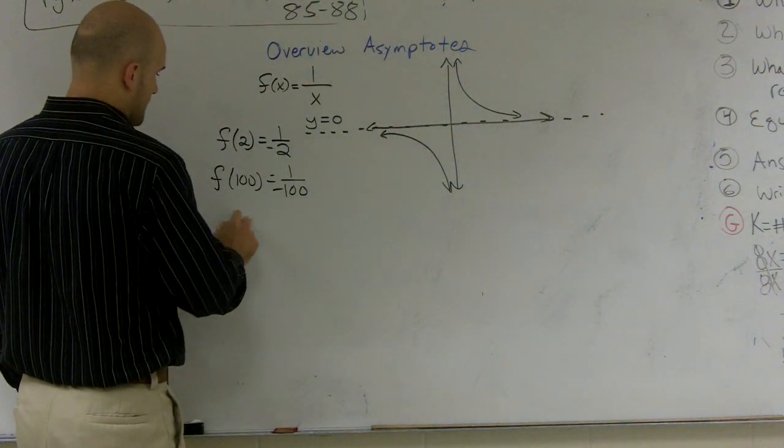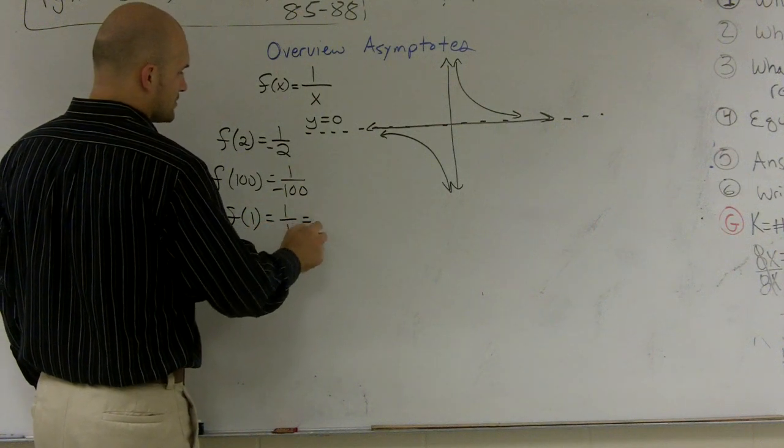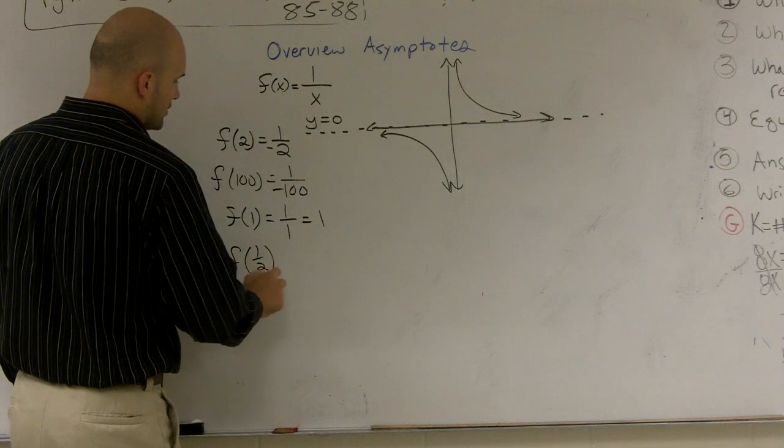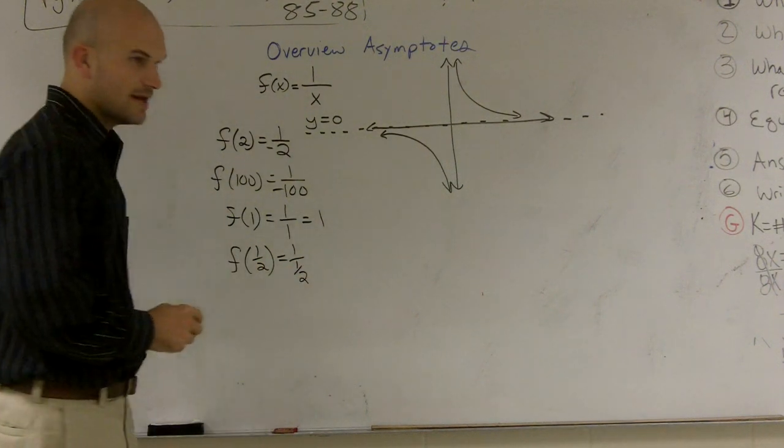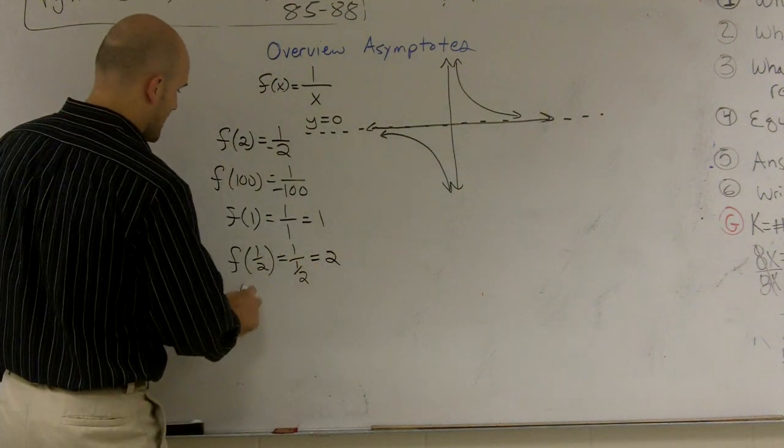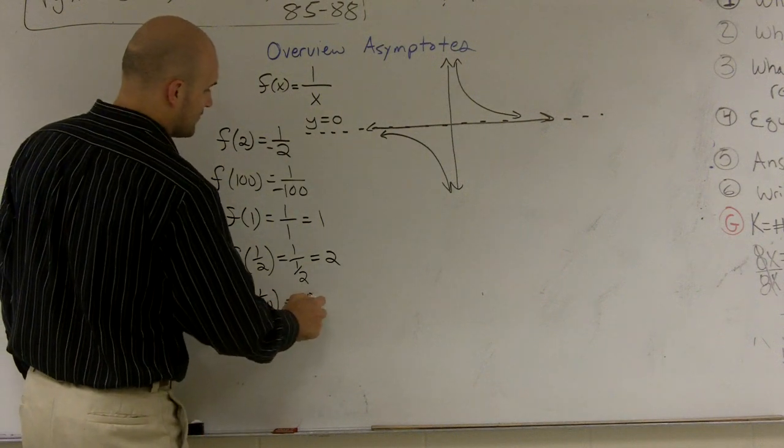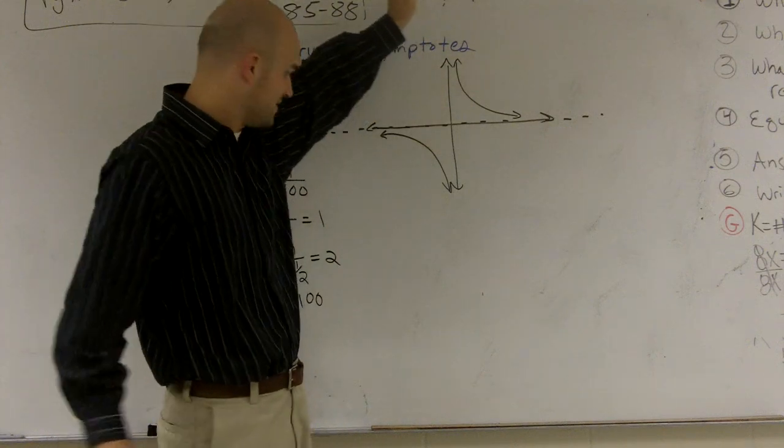Well, that would be 1 over 1, which equals 1. And let's say I looked at f of 1 half, which would be 1 over 1 half. And then when you do your calculations, that equals 2. So f of 1 over 100 is going to equal 100. So again, we keep on getting higher and higher and higher up here.